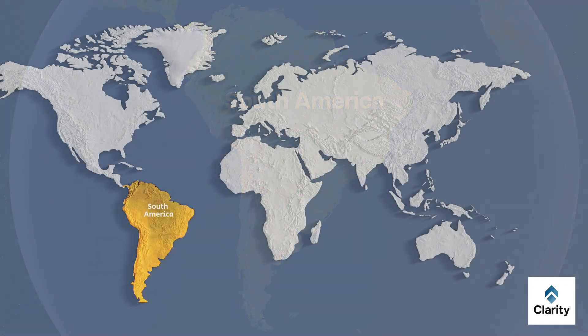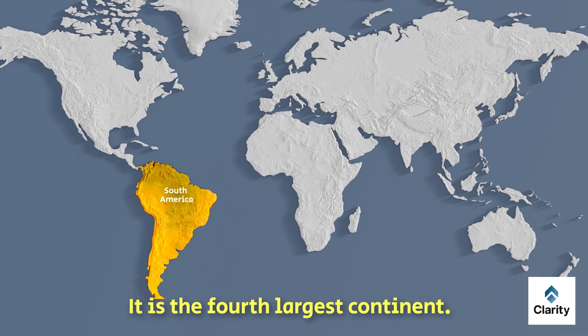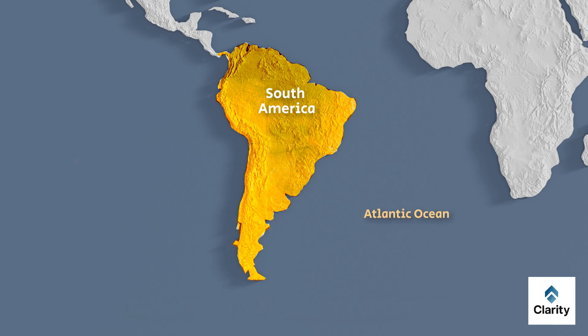Now let us start with South America. South America is one of the 7 continents on Earth and the 4th largest continent. It is surrounded by the Atlantic Ocean to the east and the Pacific Ocean to the west. In the south, it is bordered by the Southern Ocean, which surrounds Antarctica and meets the southern tip of South America.